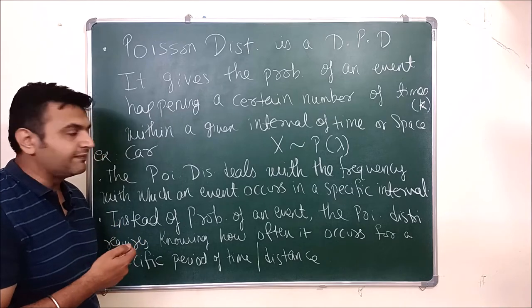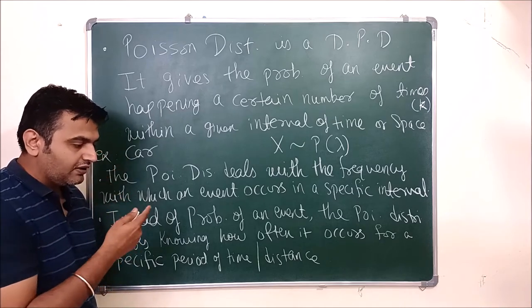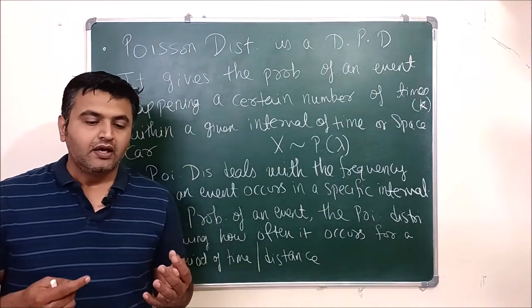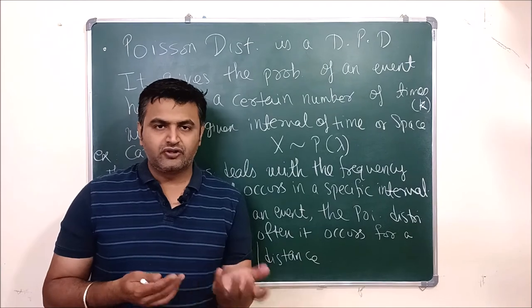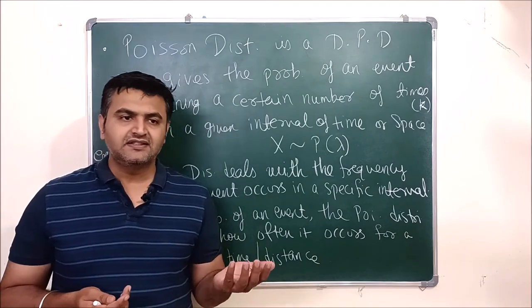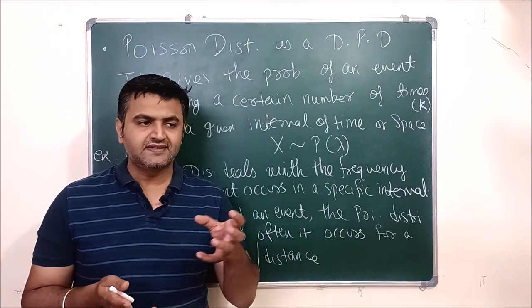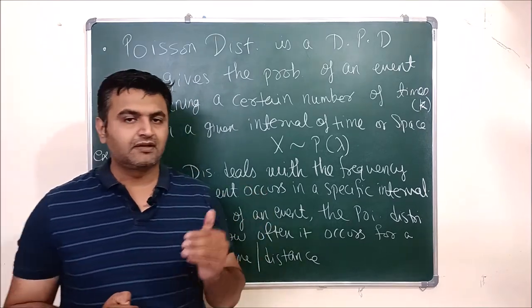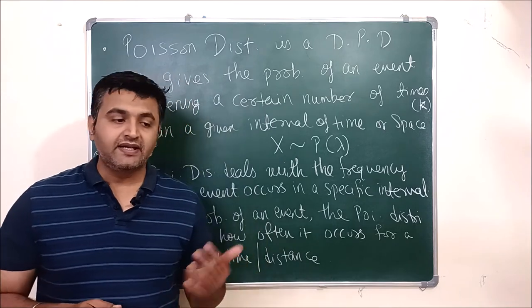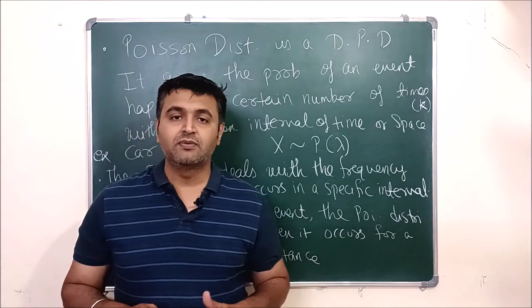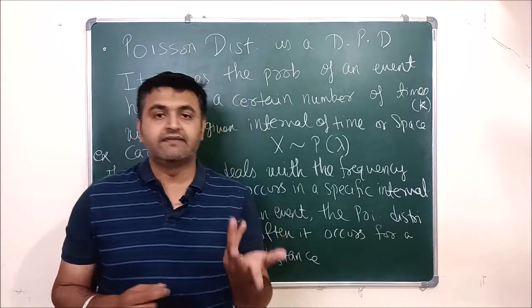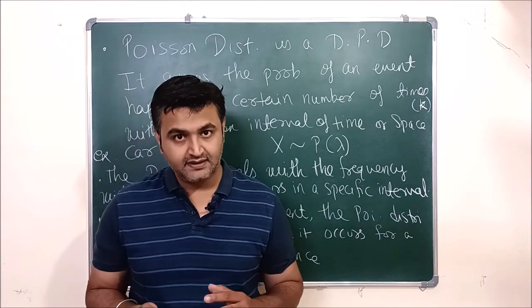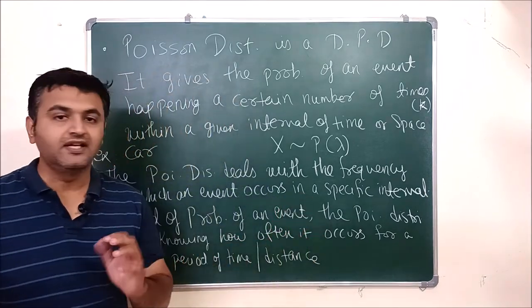Another example: suppose the cricket world cup is coming up and ICC knows that on an average in each match a team hits around 14 sixes. Now we want to determine that in tomorrow's match, what is the probability that the team will hit 17 sixes, or what is the probability that the team will hit 9 sixes. Poisson distribution will help you answer that.